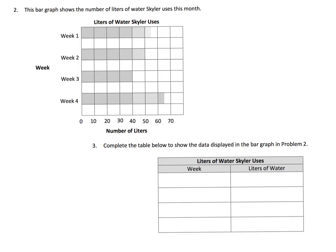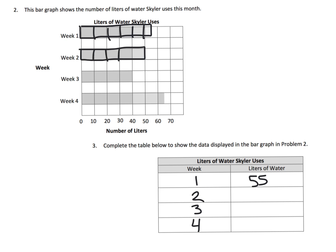Our last slide asks us to complete the table with week one, week two, week three, and week four. We already worked through this on the previous slide. Week one: ten, twenty, thirty, forty, fifty, plus a half box of five — that's 55. Week two: all full boxes — ten, twenty, thirty, forty, fifty — that's 50. Week three: another set of full boxes — ten, twenty, thirty, forty — that's 40.